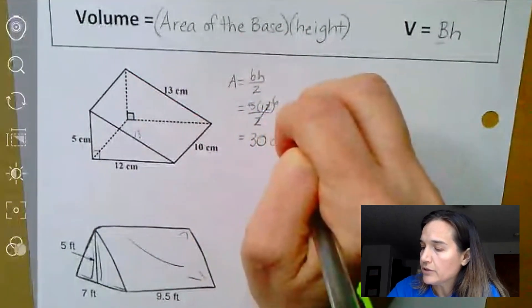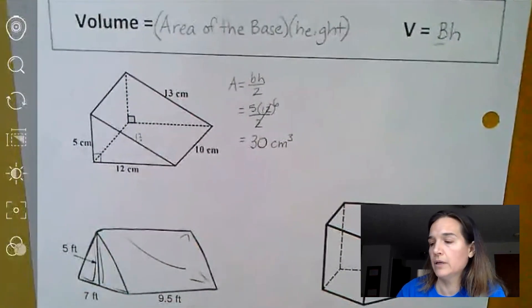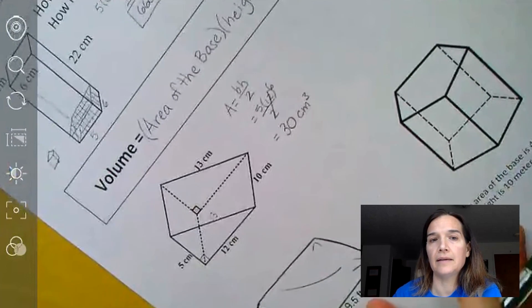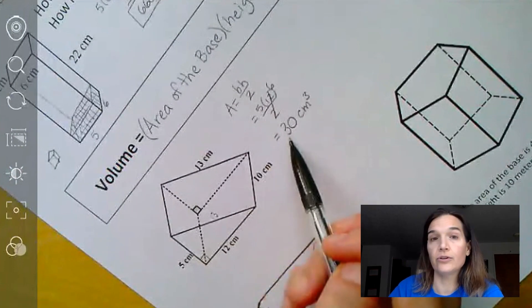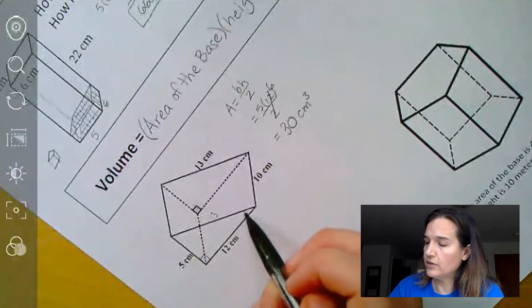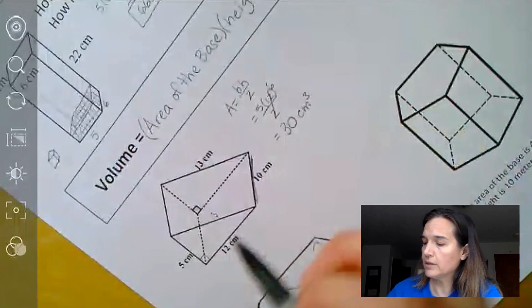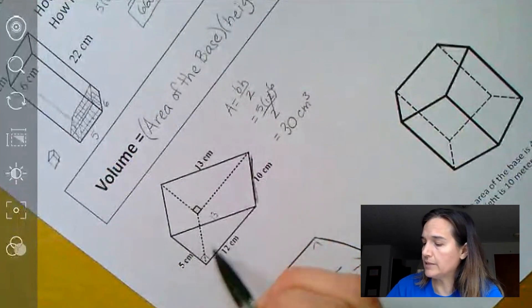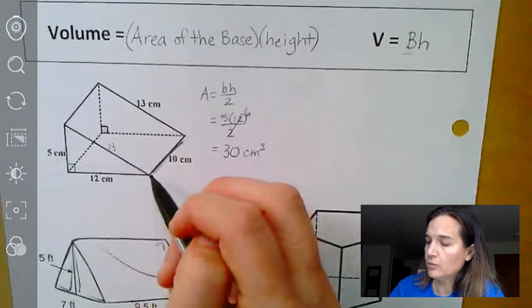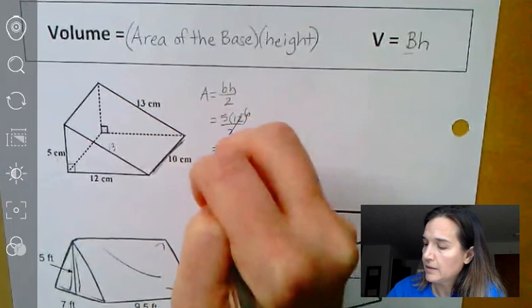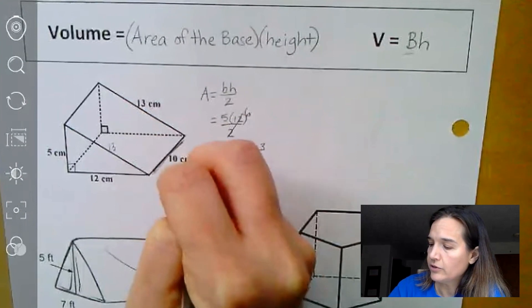And this is centimeters squared. So that means if I took this triangular prism and flipped it kind of like this, if this triangle is the bottom, I would be able to fit 30 cubes in there. So if this triangle here is the bottom with 30 cubes, then the height has to be right here. This is how tall it is, because this is the bottom base. So in that case, we fit 30 cubes where the triangle is. We need how many layers? 10 of them. And that gives us 300 centimeters cubed as the volume for this shape.